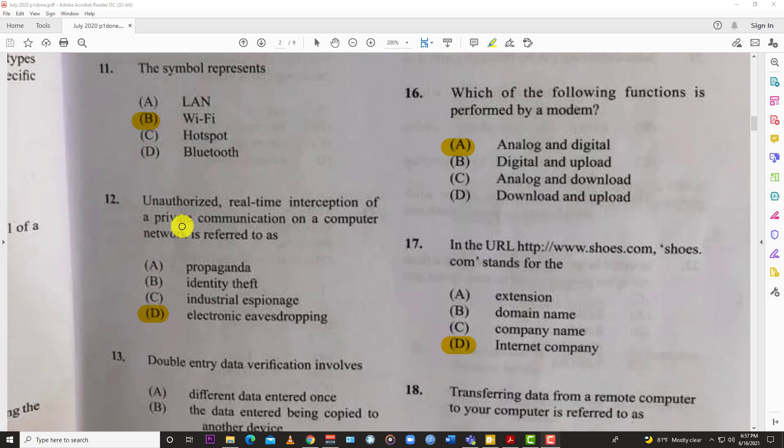Number twelve: unauthorized real-time interception of a private communication on a computer network is referred to as electronic eavesdropping. Most of these can be done manually - propaganda you just print something and put it out there, fake news, identity theft with someone's social security or bank account number, industrial espionage almost like a James Bond kind of thing. But the best answer is D, electronic eavesdropping - you hack in, in a sense.